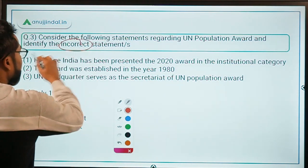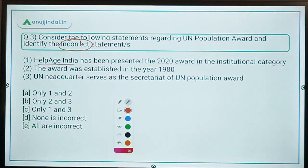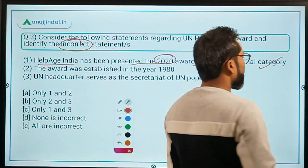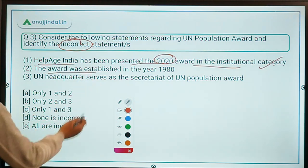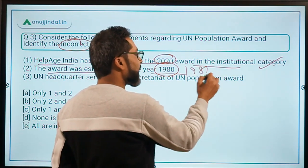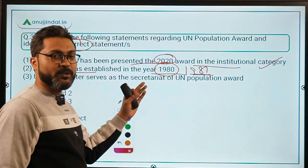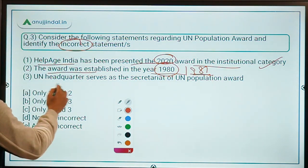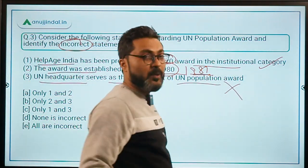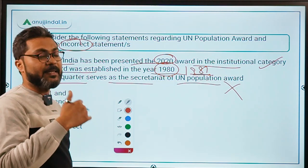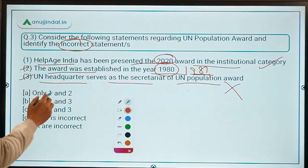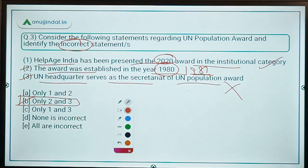Finding the incorrect statements: Statement one — Help Age India has been presented the 2020 award in the institutional category — correct. Statement two — the award was established in 1980 — incorrect, it was 1981. Statement three — United Nations Headquarters serves as the Secretariat — incorrect, it is the United Nations Population Fund. So both statements 2 and 3 are incorrect, making option B the correct answer.